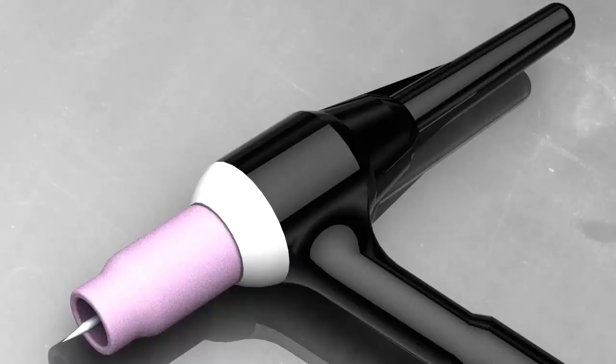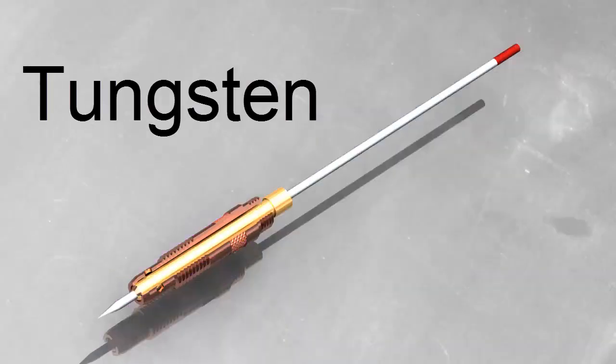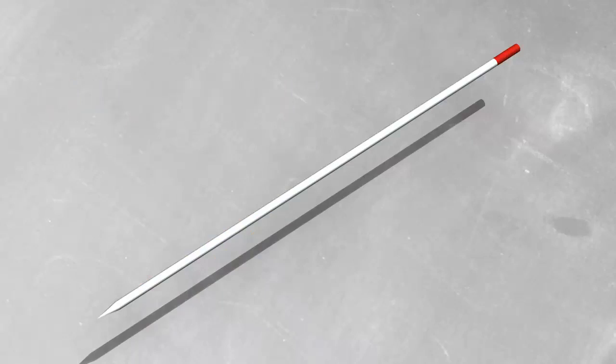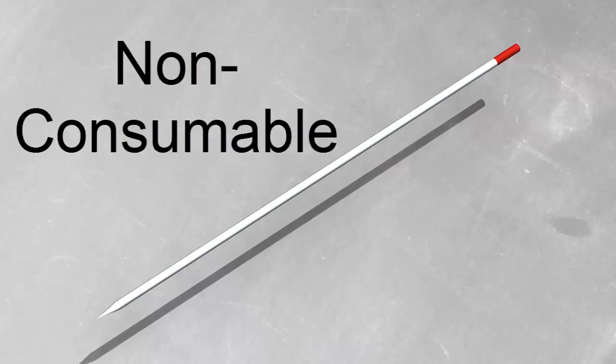TIG welding uses a tungsten electrode. Tungsten has an extremely high melting point. When you TIG weld, the electrode gets hot, but it doesn't melt. We say that it's a non-consumable electrode. That doesn't mean it lasts forever. That just means that it doesn't melt and become part of the weld.